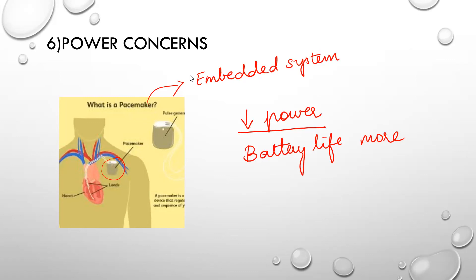So these are some of the most important characteristics — there are many characteristics, but these six are the most important characteristics of embedded systems. If you have any doubts, you can ask me. Thank you.